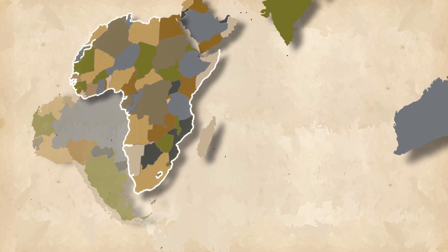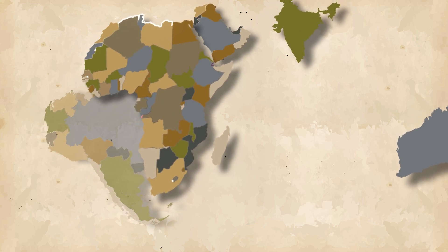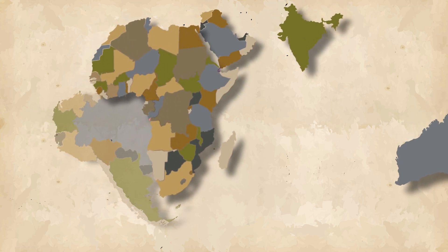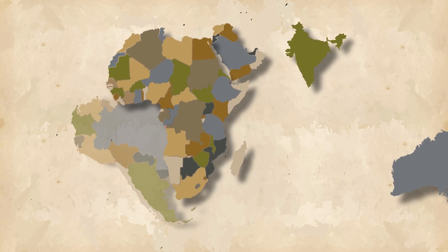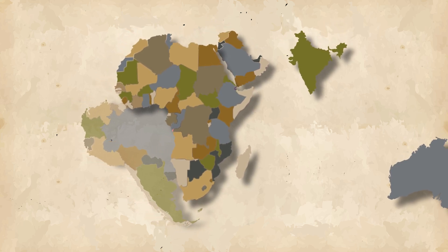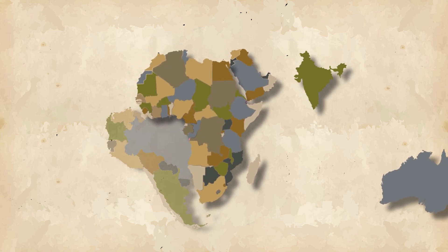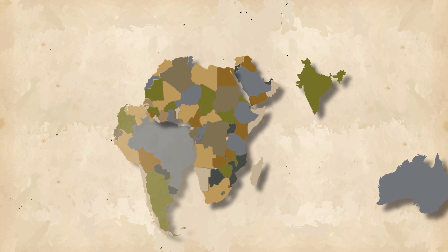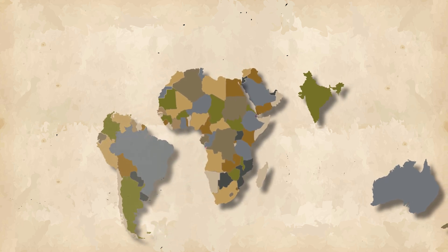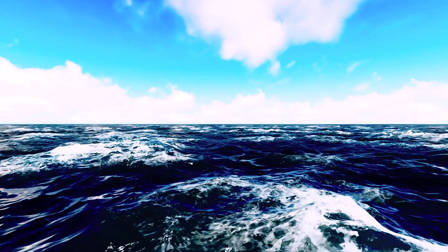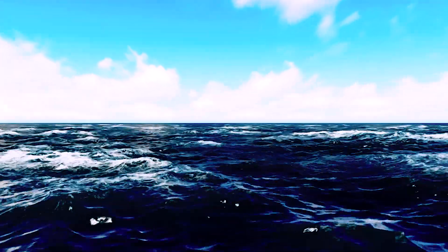Unlike Madagascar, the African mainland was tectonically relatively stable throughout the Mesozoic. However, despite its stability, significant changes occurred in its position relative to the other continents as Pangea continued to break apart. By the beginning of the late Cretaceous, South America had separated from Africa, completing the formation of the Atlantic Ocean at its southern end. This event had a profound effect on global climate by altering ocean currents.